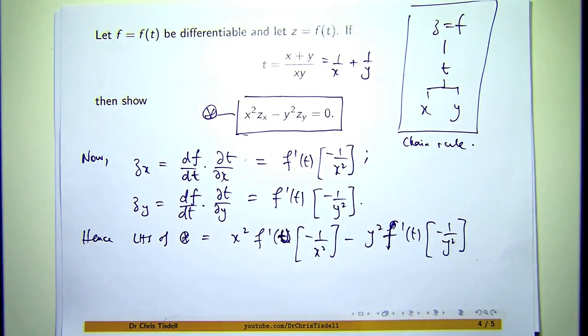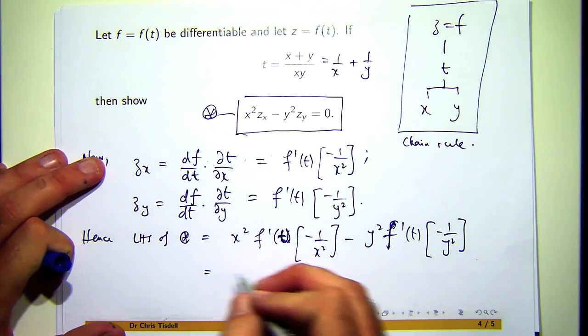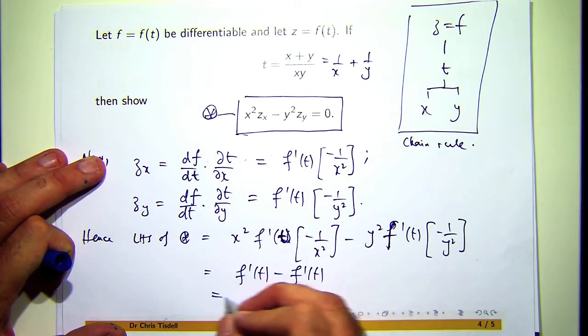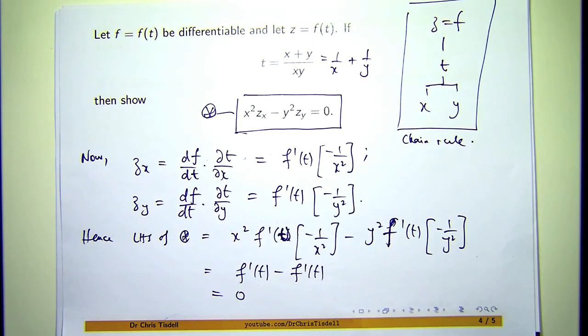All right, so now what's happening? The y squared is going to cancel out, the x squared is going to cancel out. What am I left with? Zero. So is that the right-hand side of star? Yes, it is.